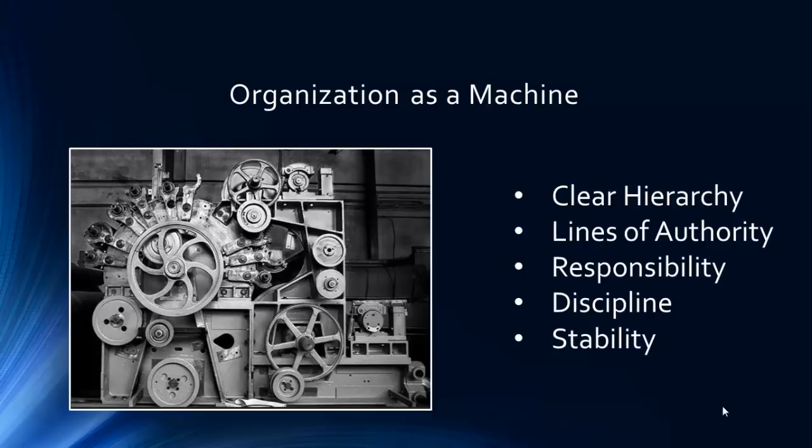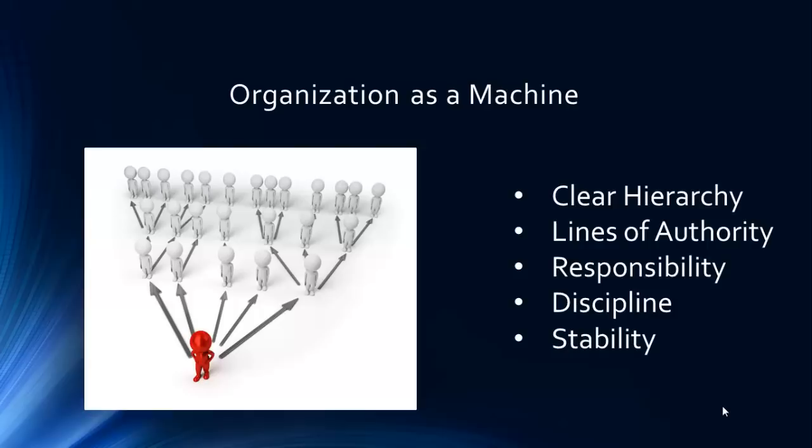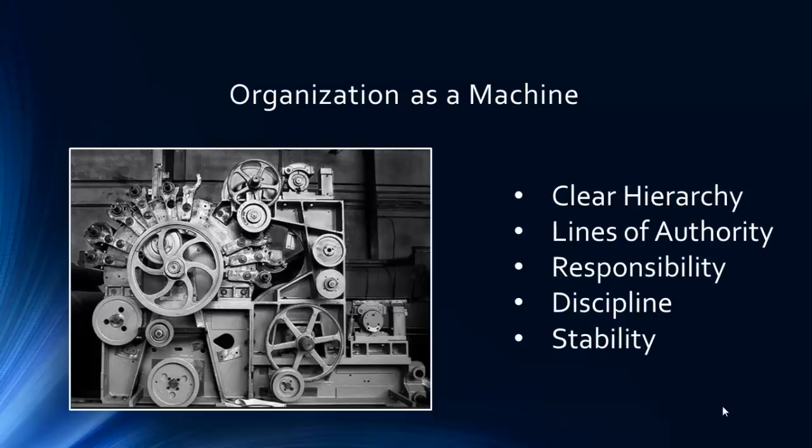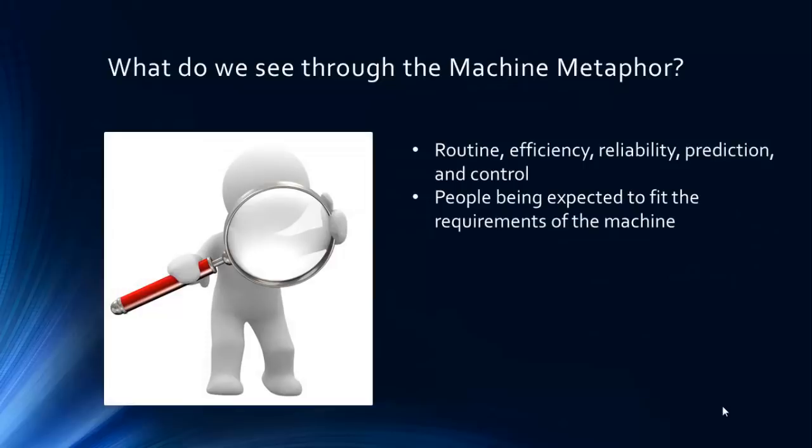The machine metaphor emphasizes the orderly arrangement of who does what and who has authority over whom. It is a mechanical type of thinking concerned with a clear hierarchy, lines of authority, responsibility, discipline, and stability. Routine, efficiency, reliability, prediction, and control are the elements we see through this lens.